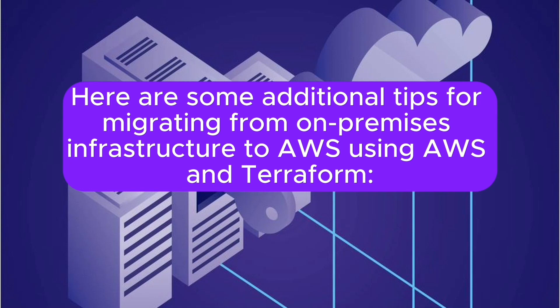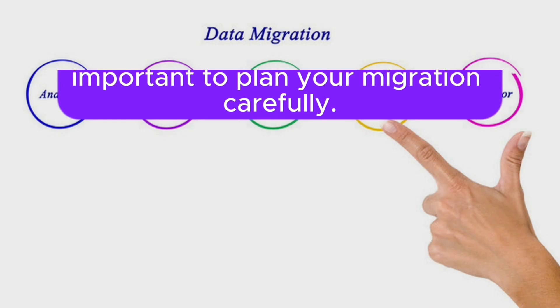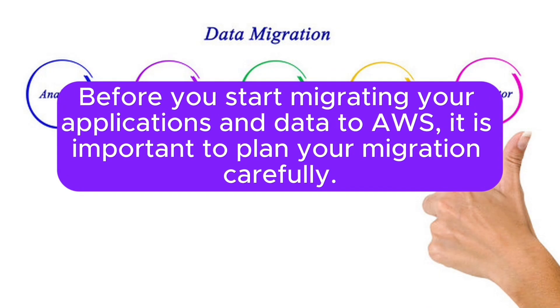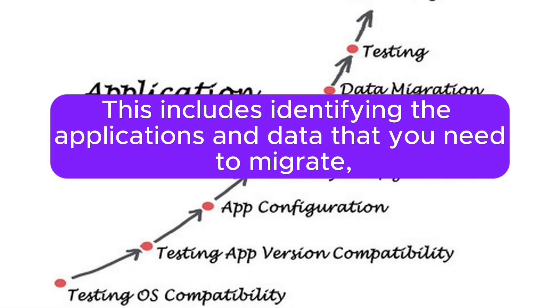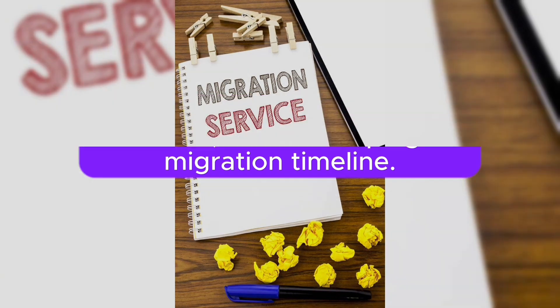Here are some additional tips for migrating from on-premises infrastructure to AWS using AWS and Terraform. Tip 1: Plan your migration carefully. Before you start migrating your applications and data to AWS, it is important to plan carefully — this includes identifying the applications and data to migrate, choosing the appropriate AWS services, and developing a migration timeline.